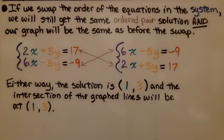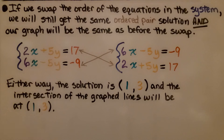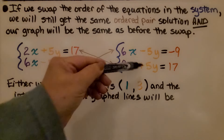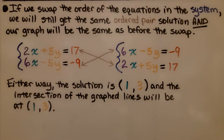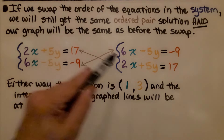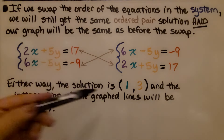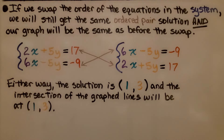Before we go, one more thing: if we swap the order of the equations in the system, we will still get the same ordered pair solution, and the graph will be the same as before the swap. Either way, the solution for this system is x equals one, y equals three, and the intersection of the graph lines will be at (1, 3).